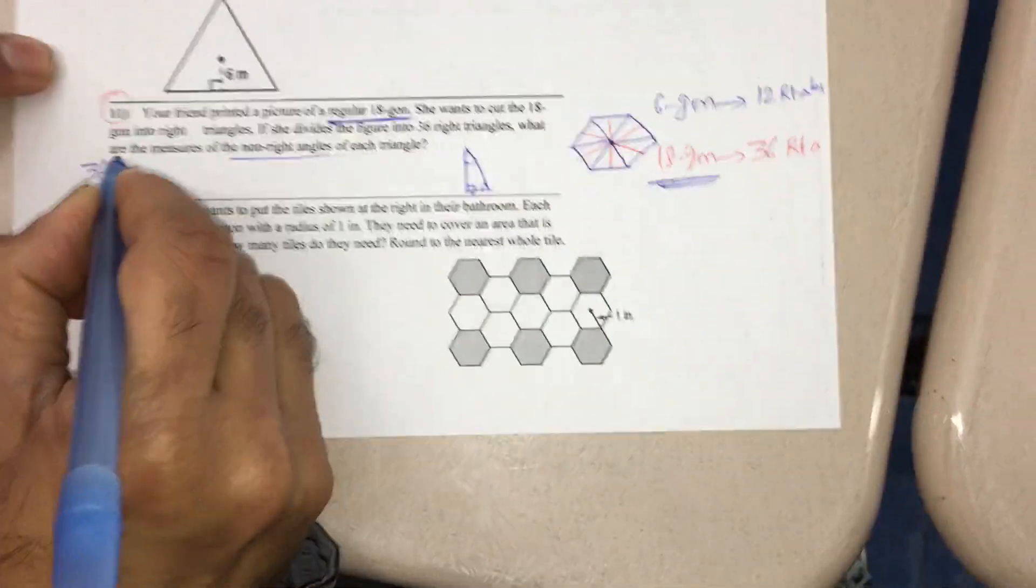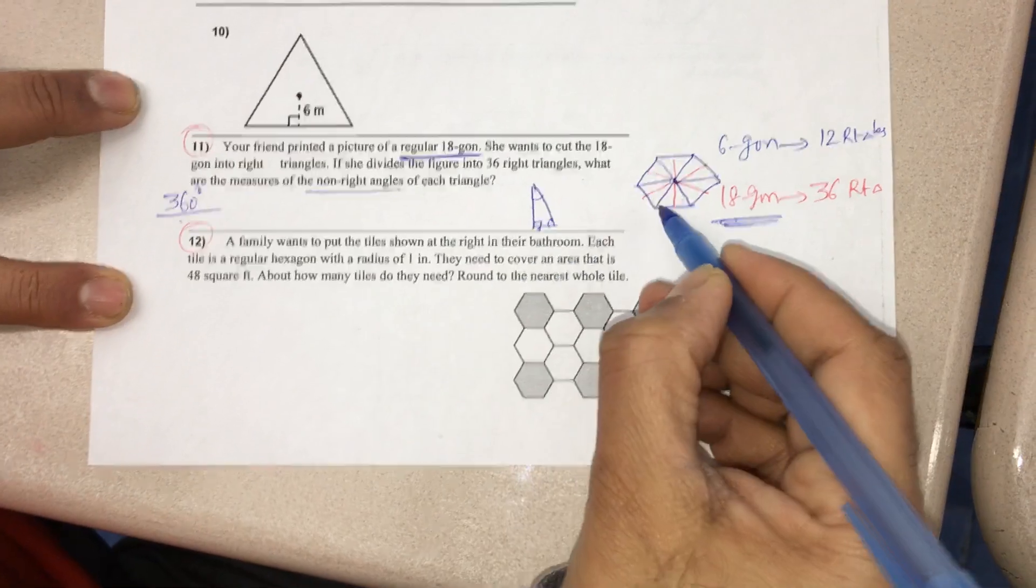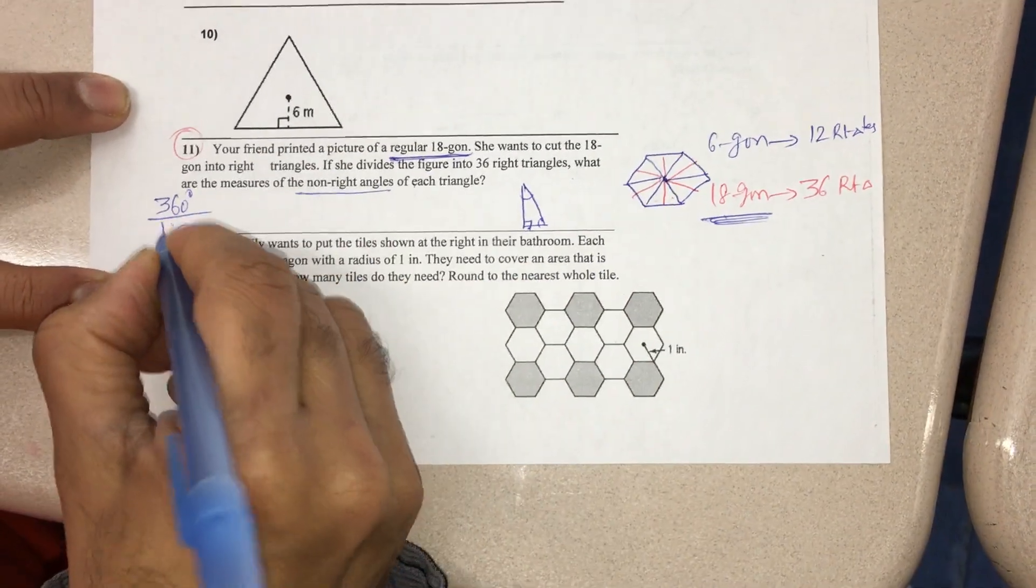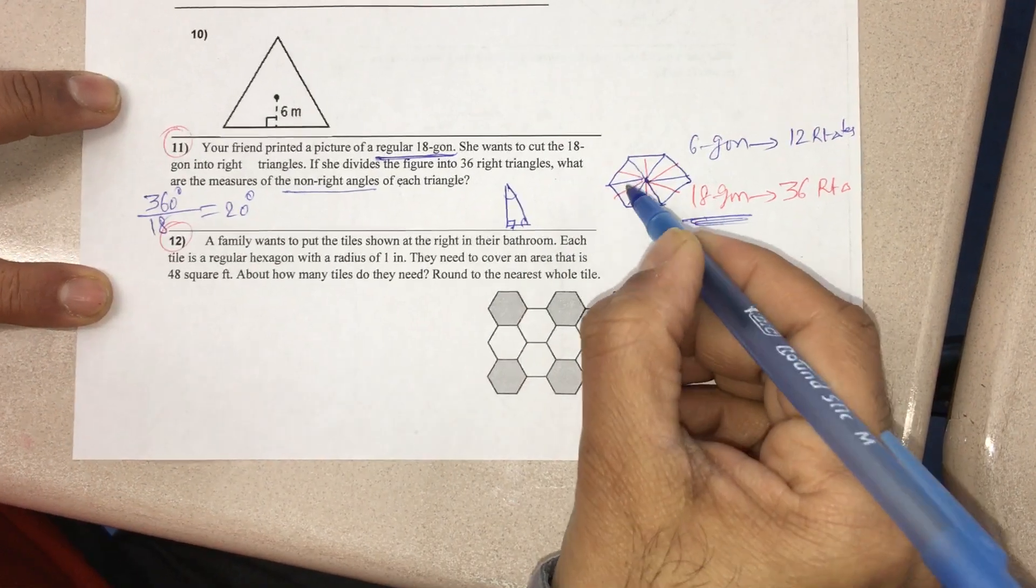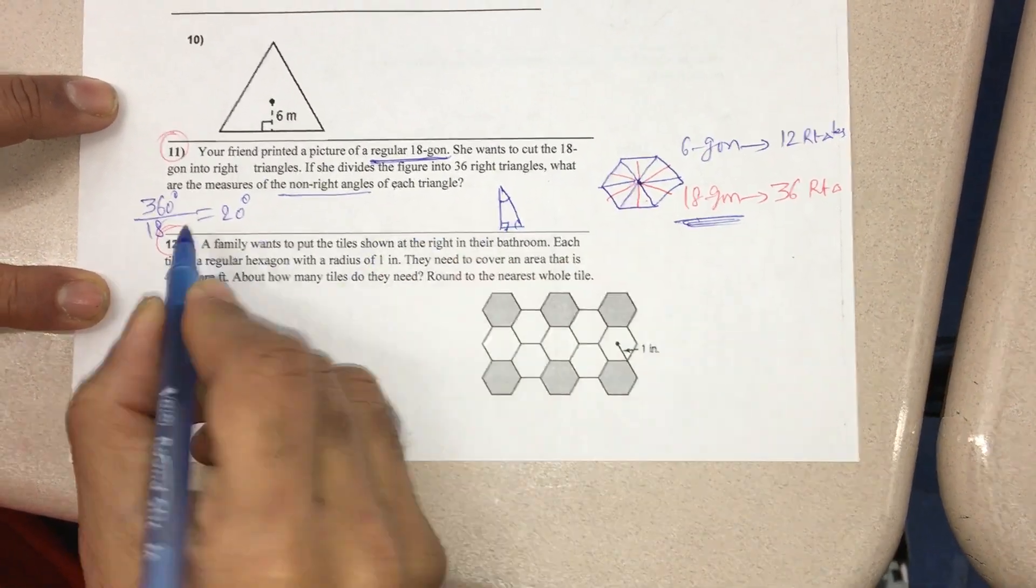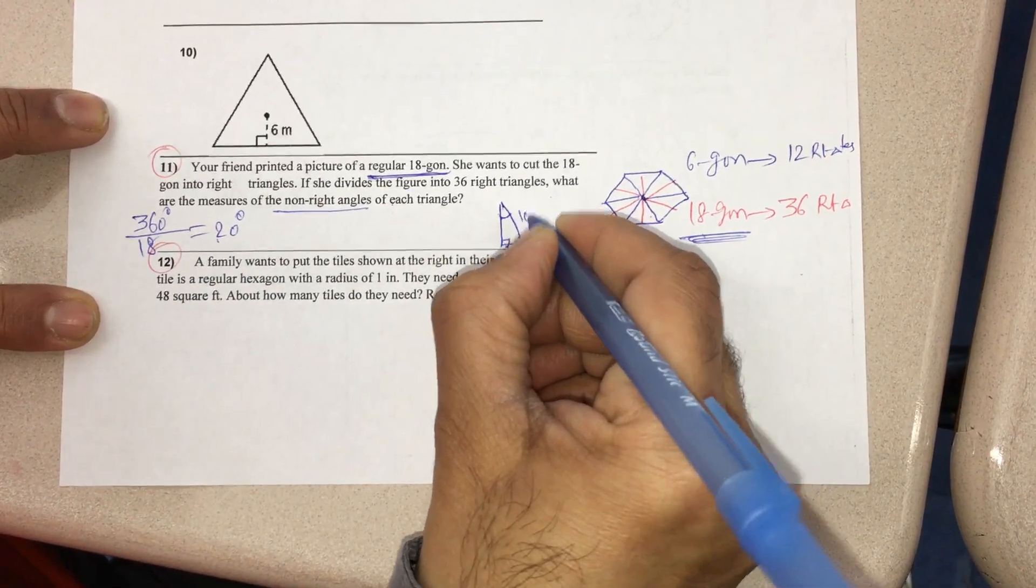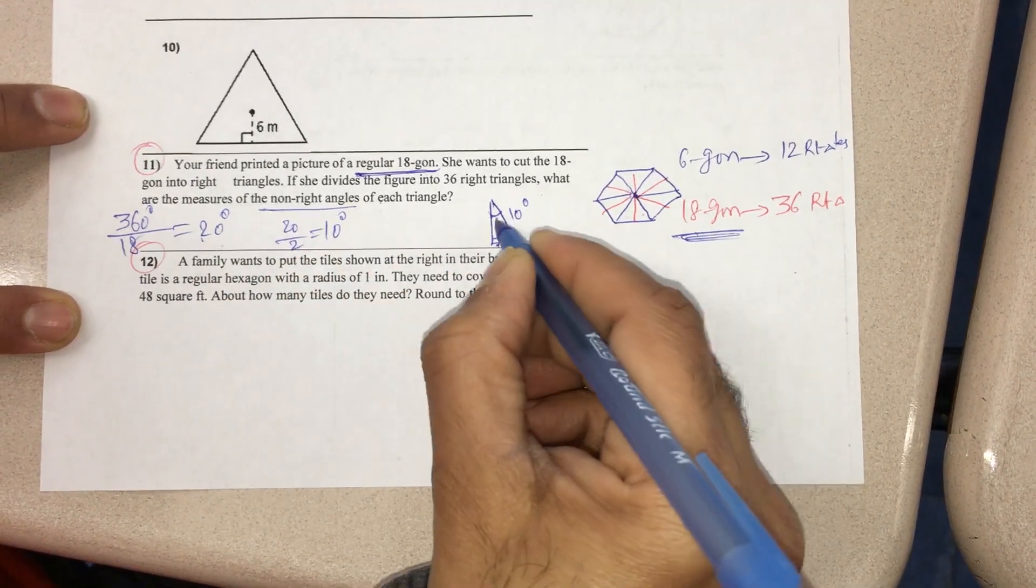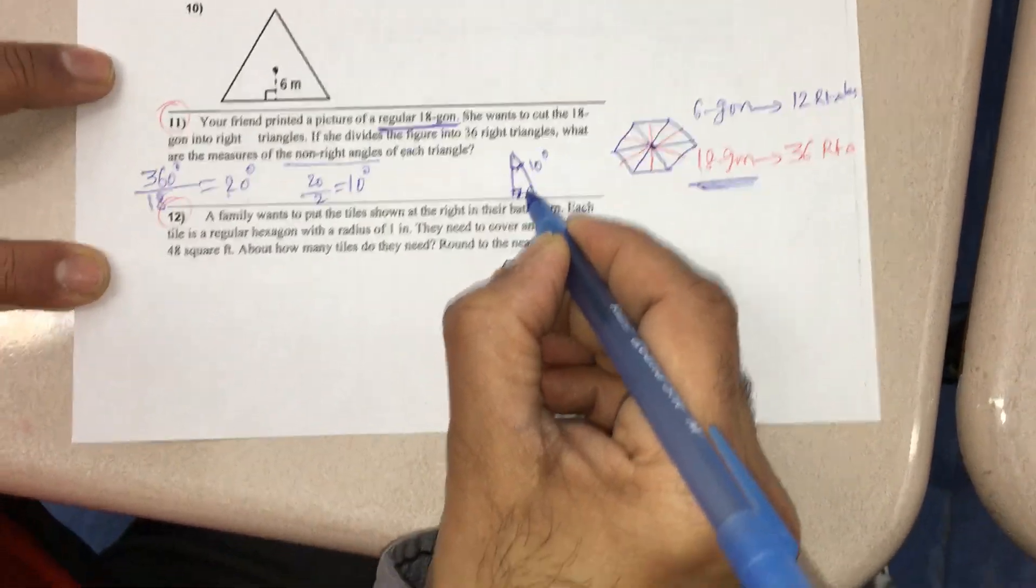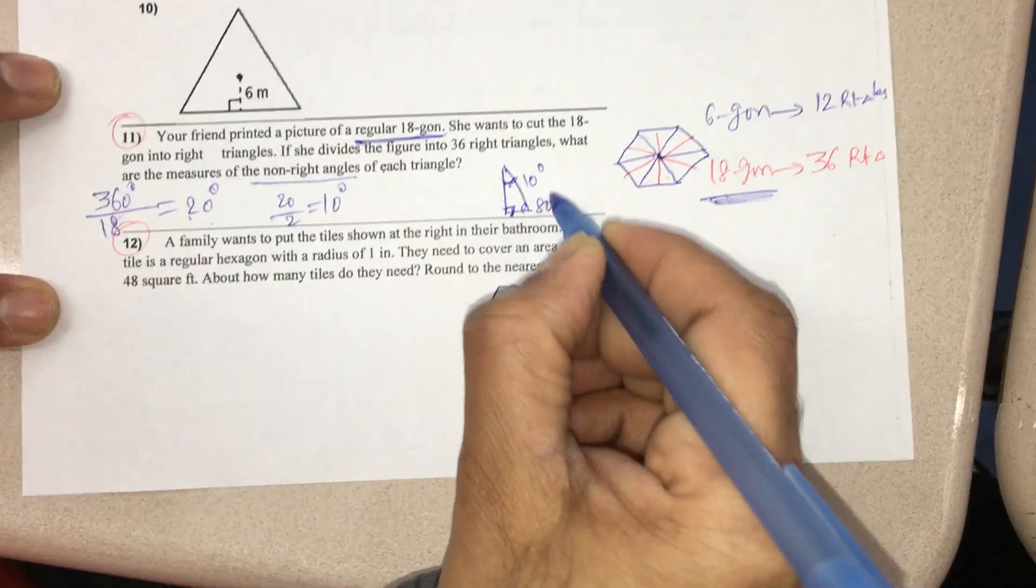For that, you have to divide 360 with 18-gon, means 18. Then you will get 20 degrees. This 20 degrees is the total angle, but this is half of the 20, which is 10 degrees. Half of 20 is 10. That is why I wrote 10 here and this is 90, therefore this angle must be 80.